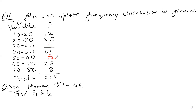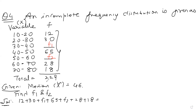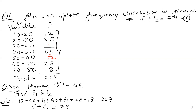First, since the sum of all frequencies should equal 229: 12 + 30 + F1 + 65 + F2 + 25 + 18 = 229. Solving this, you get F1 + F2 = 79. This is equation number one.